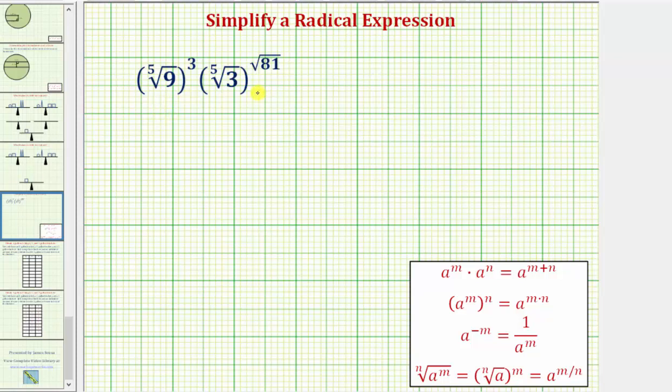We want to simplify the given radical expression. Notice how looking at the radicals, the only radical that appears to simplify nicely is the square root of 81, which equals nine, since nine times nine equals 81.